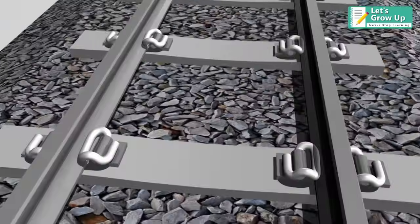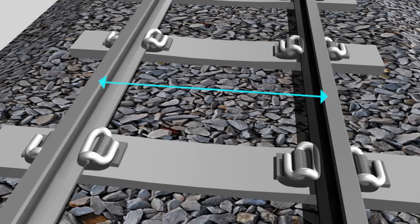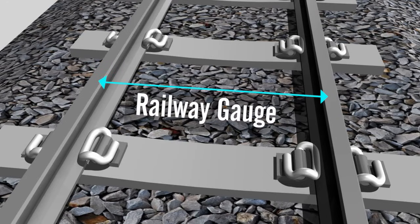The distance between the two tracks on any railway route is known as railway gauge.